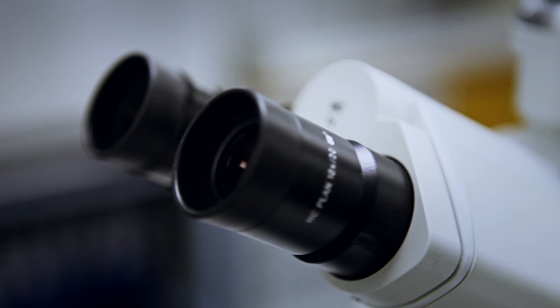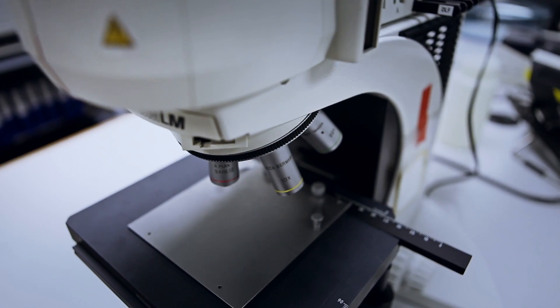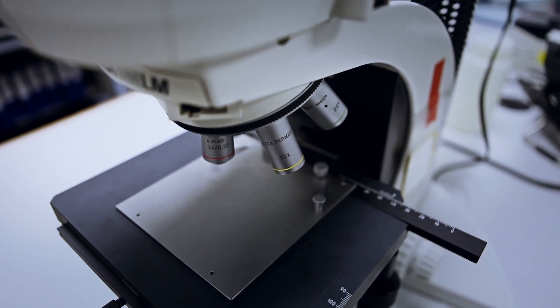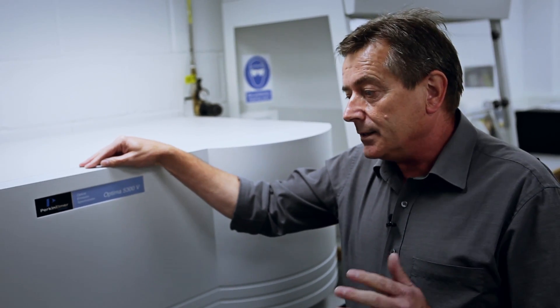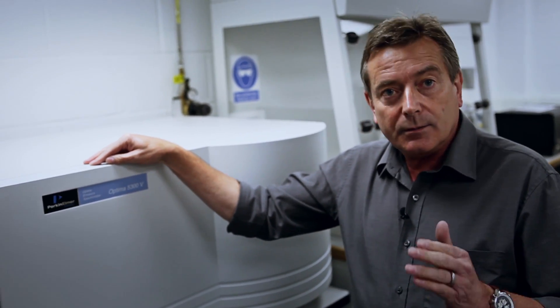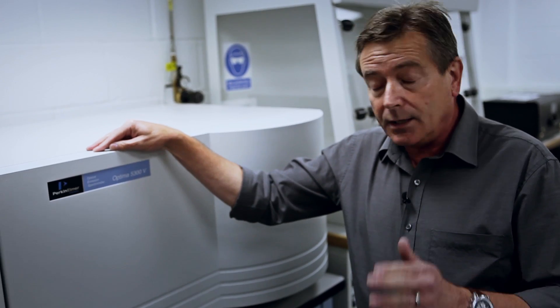It's predominantly kitted out with Perkin Elmer equipment. This is an optical emission spectrometer. It looks at metallic elements in oil. It can detect up to 23 metallic elements in oil under 8 microns.